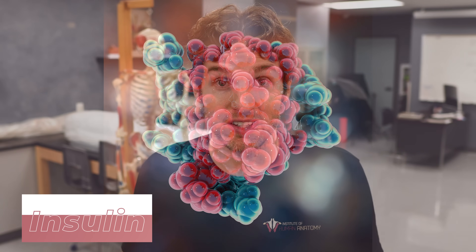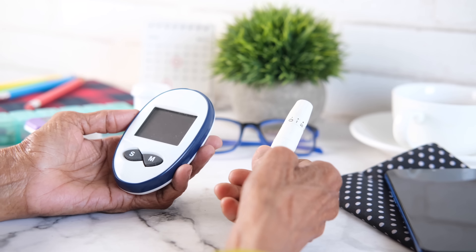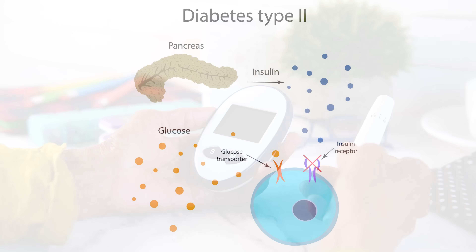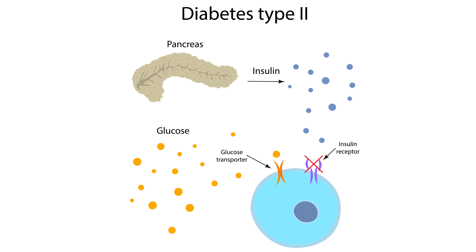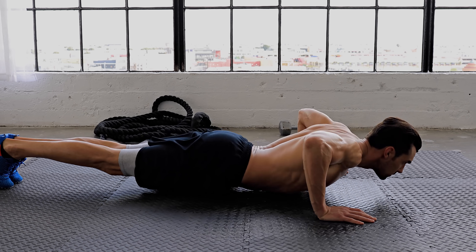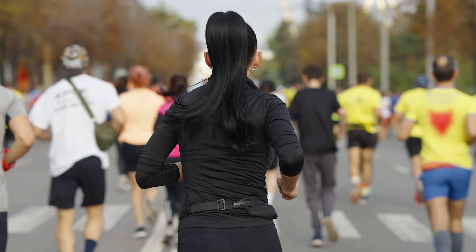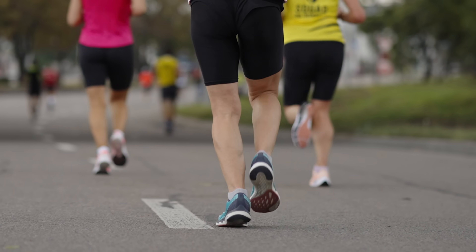Exercise also sensitizes muscles to insulin, especially directly after exercise — the opposite of what happens in type 2 diabetes, where cells become insensitive to insulin. Something really cool is that an exercising muscle doesn't actually need insulin to bring in glucose like a resting muscle does. So during a marathon, when you ingest a simple sugar to replenish carbohydrate stores, those contracting muscles can bring in glucose without needing insulin. Exercise has amazing benefits for how we process and utilize sugars and glucose.